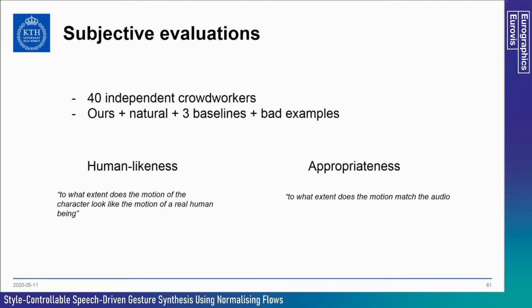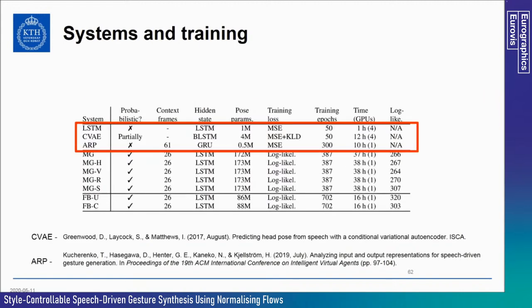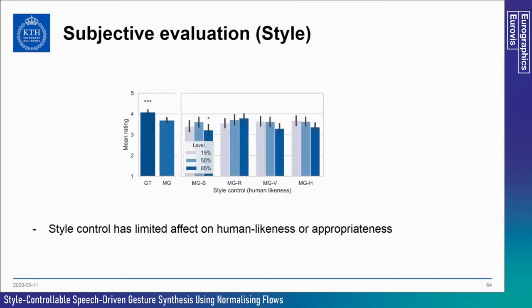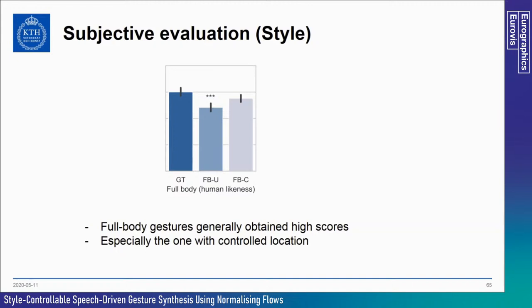We performed subjective evaluation using an online crowd platform, asking 40 crowd workers to rate gestures on human-likeness and how well they match the speech. We used three baseline methods: one plain LSTM, one conditional variational autoencoder, and one system based on representation learning. Our system showed significant improvements over all baselines and categories, except against the human system and the representation-learning baseline for human-likeness. The full body systems were generally highly scored, and the one with controlled location showed no significant differences from ground truth.